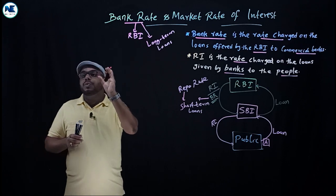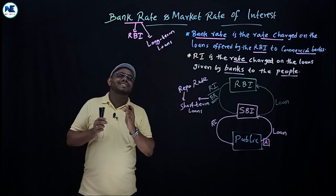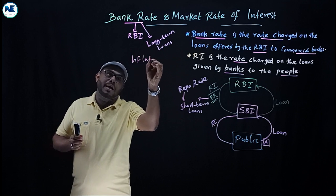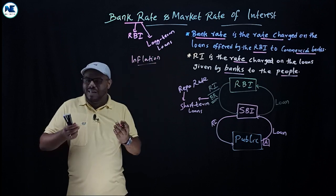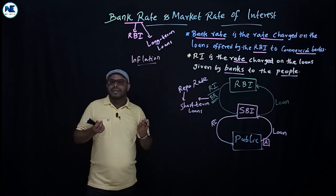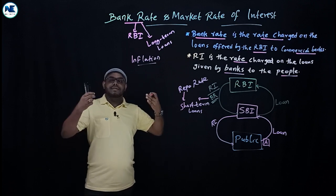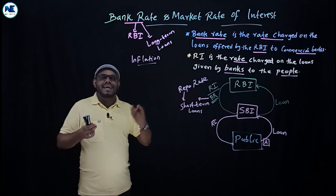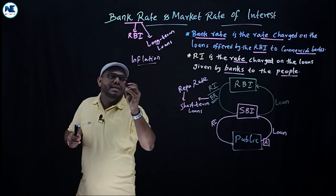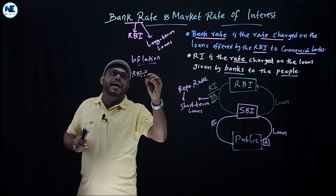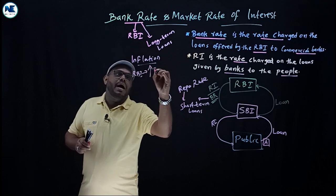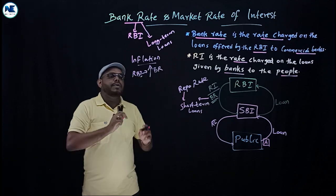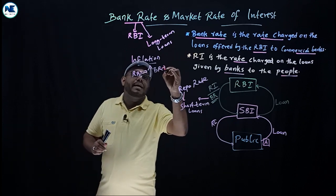There are two major economic problems — inflation and deflation. Inflation is a continuous and persistent rise in the general price level. When there is inflation, RBI will hike the bank rate. RBI will increase the bank rate to tackle inflation.